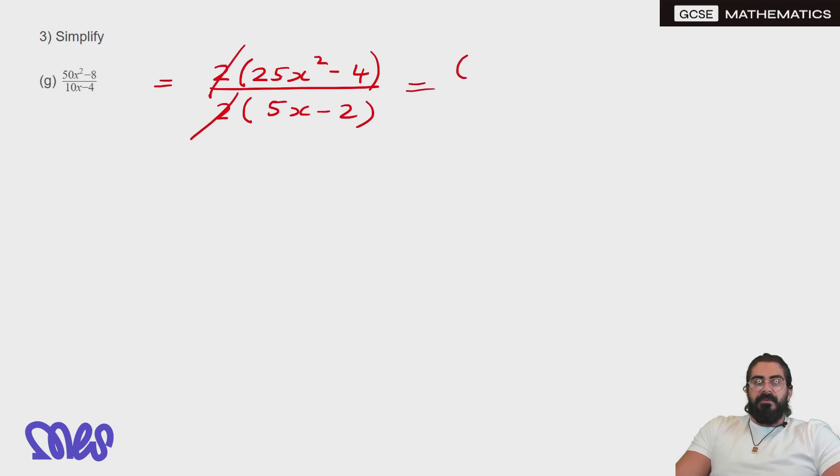And on the top here, we have 25x squared. So what multiplies by itself to get that? It'll be 5 times x. 4 is going to be 2. So 5x plus 2, 5x minus 2, all over 5x minus 2, which you can keep a bracket around it because then it can cancel bottom and top. So your final solution is 5x plus 2.